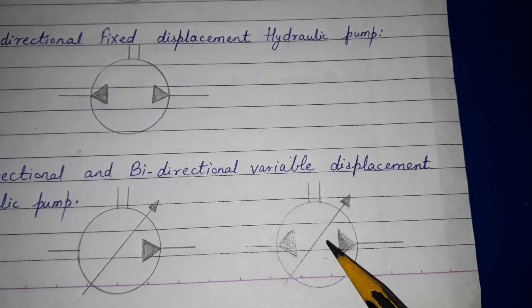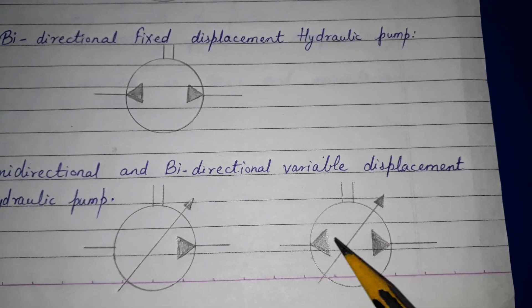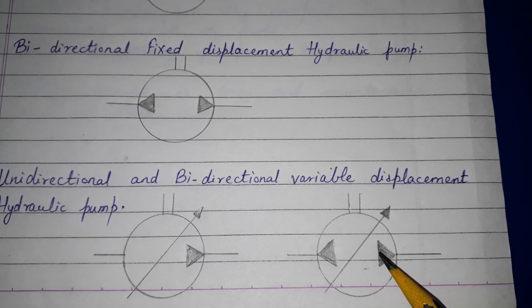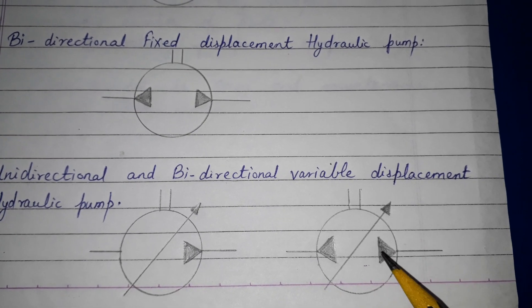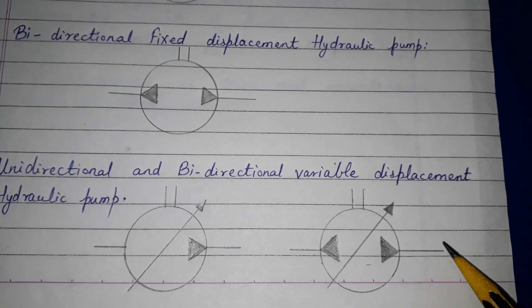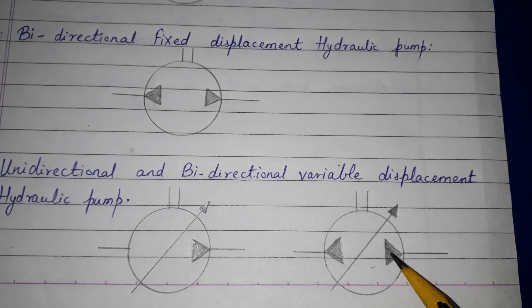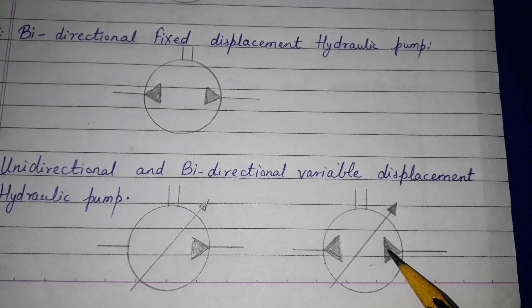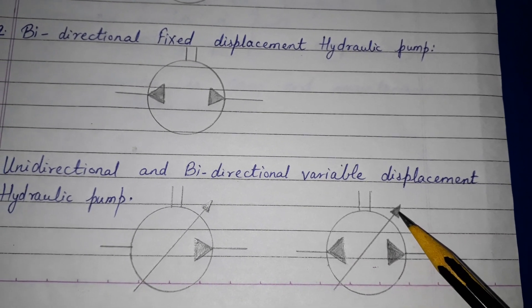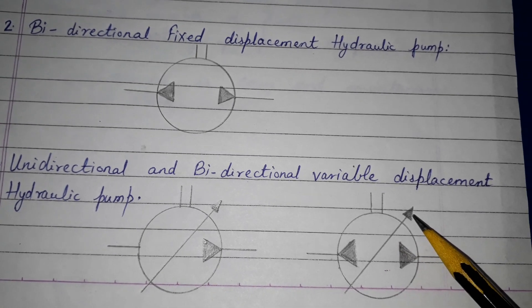This is the bidirectional variable displacement pump. Here you can see two arrows in both directions, meaning the pump flow is in both directions. The triangle is filled, which means it is a hydraulic pump. This arrow indicates variable displacement or variable discharge.